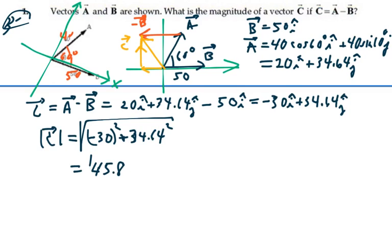So that is the magnitude of A minus B, the vector C, 45.8.